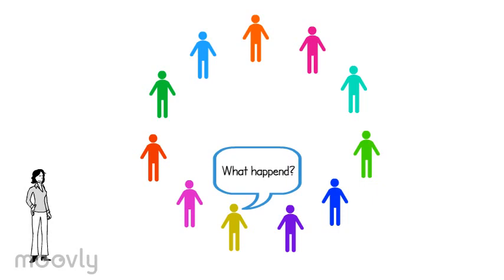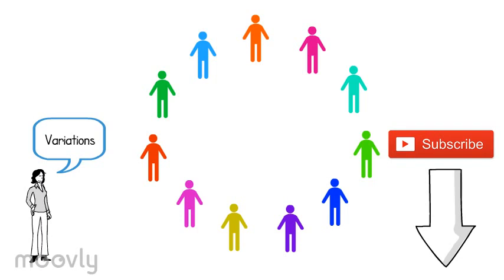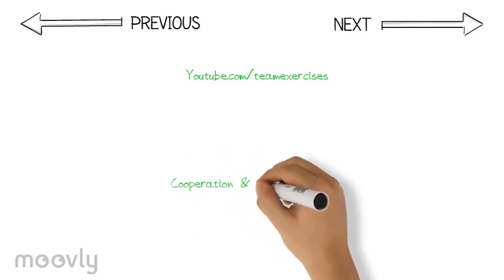Do you want to know the answer? Type a question below this video in which I can answer with yes or with no. The one that guesses the situation first wins. The trainer guides the team and applies variations. What kind of variations you can read below this video on YouTube. And haven't you subscribed yet? Click on the subscribe button to stay tuned for a new video each Sunday on youtube.com slash team exercises to improve cooperation and communication.